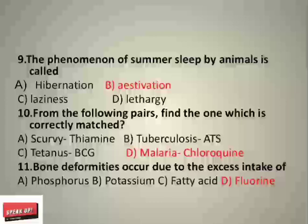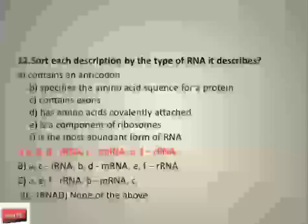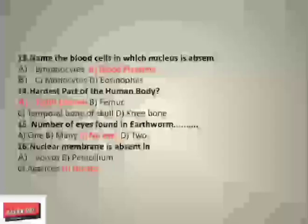From the following pairs, find the one which is correctly matched. The correct answer is malaria — chloroquine. Next, sort each description by the type of RNA described. Remember: transfer RNA, messenger RNA; tRNA contains an anti-codon. Name the blood cell in which nucleus is absent. The correct answer is blood platelets.